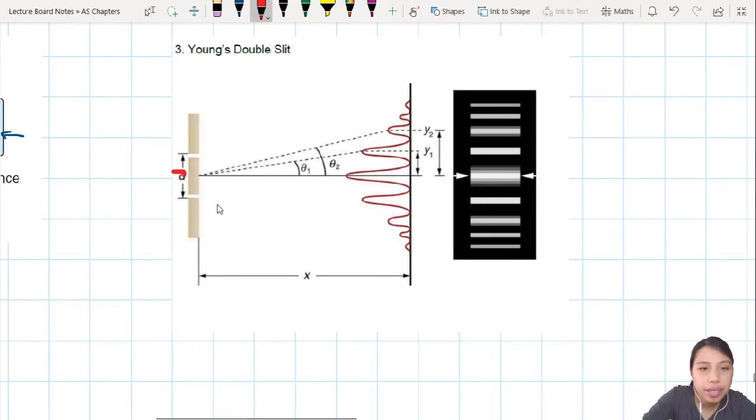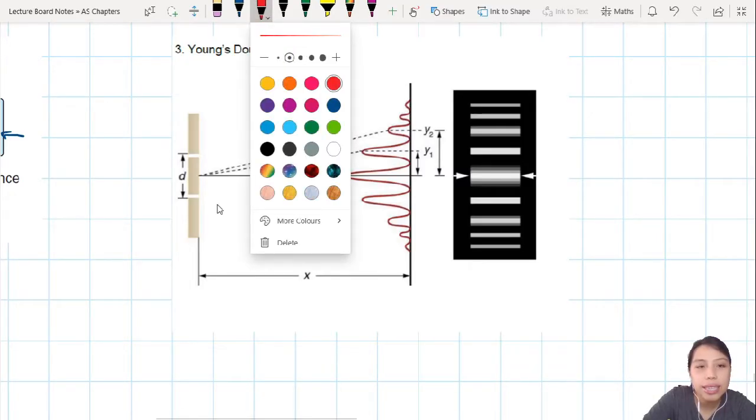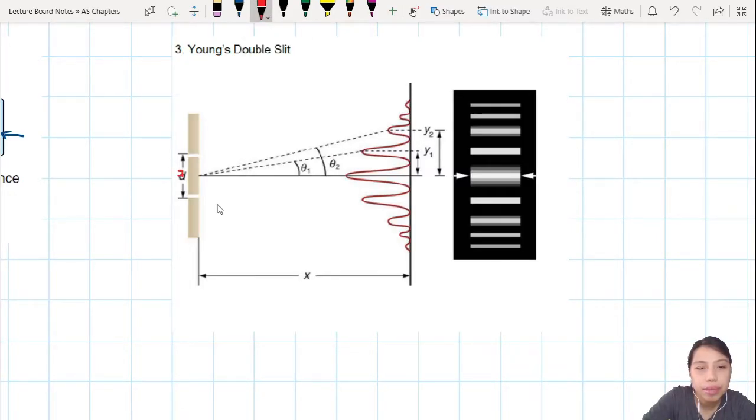I'm going to call this A. This is way too big. A is the slit separation. Here I've got one slit, here I've got another slit for the light to come through. A is just the slit separation. I'm going to rename this to D. D is just the distance between your slits and the screen, where you will see the pattern form.